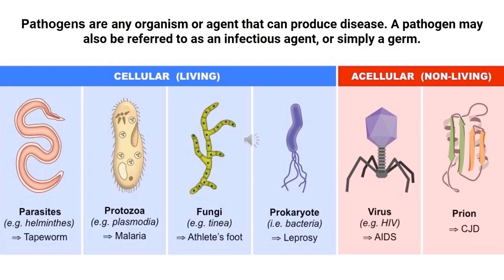A pathogen is any organism or agent that can produce disease, also referred to as an infectious agent or a germ. Pathogens are generally living things, except in the case of viruses and prions, which are considered not living, but they reproduce and transmit diseases and are therefore included in the pathogen category.